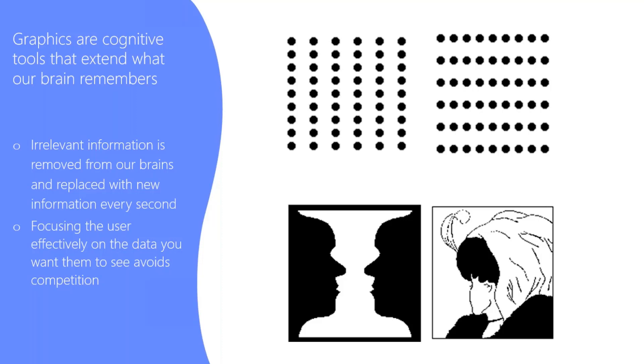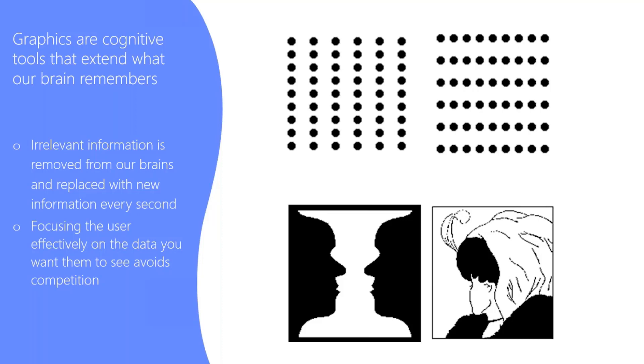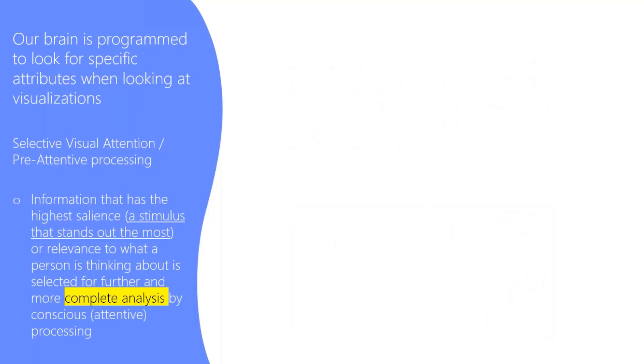And what happens with the brain is that we're constantly—things are coming in and then things are leaving. Every few seconds, things are coming in and things are leaving. So it only retains what's important. And that's why it's important that when you design your visualizations and use these best practices, you're actually highlighting the things that matter the most. So our brain is programmed to look for specific attributes. And you'll see here, the stimulus that stands out the most will help you complete your analysis. And this is called selective visual attention and pre-attentive processing.